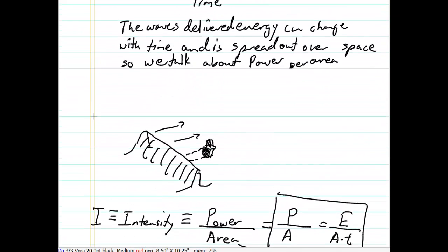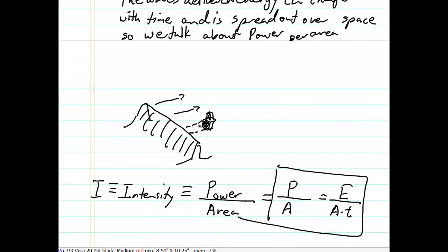Again, the reason for use of intensity is because we usually only catch a small part of the total wave. So if we know the power per area and we know the area of the object we're using to catch the wave, we can multiply the area of this object times the intensity to find the power that's delivered. Multiply by the time to find the total energy delivered. All right, that finishes this video.